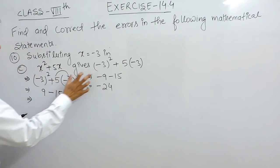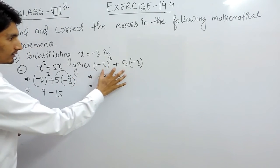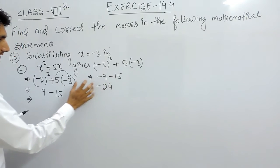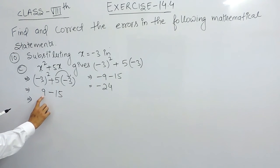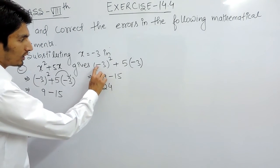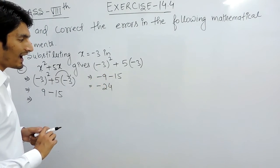So if I compare the first part with the first part, the first step is the same as this, but in this second part clearly it should have been plus 9, but here it is written as minus 9 because this minus is copied as it is. So here this is the error.